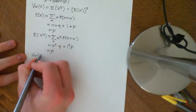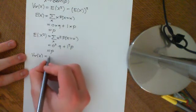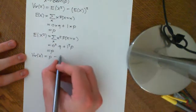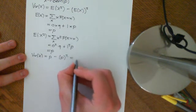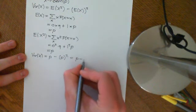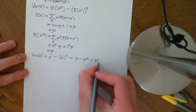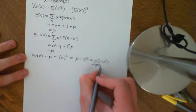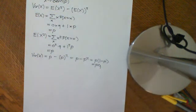So the variance of X is equal to the expected value of X squared, which is p, minus the expected value of X squared, which is p squared. So we get that it's equal to p minus p squared, which we can factor into p times (1 minus p), which we write as pq. That is the calculation of the variance of a Bernoulli p distribution.